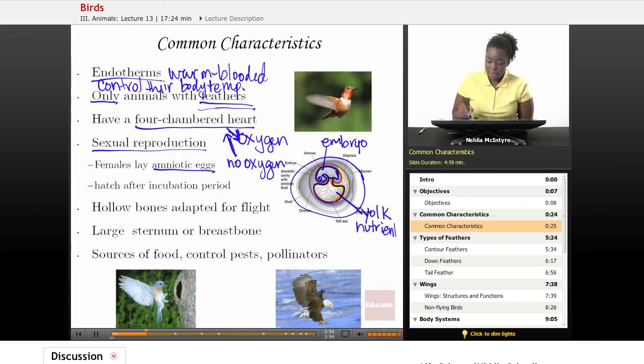It also has what we call albumin, which is actually a protein to help the embryo to grow, and it's got what we call amniotic fluid inside, which is kind of like a cushion to protect the embryo. The egg would be filled with this fluid that surrounds the embryo.